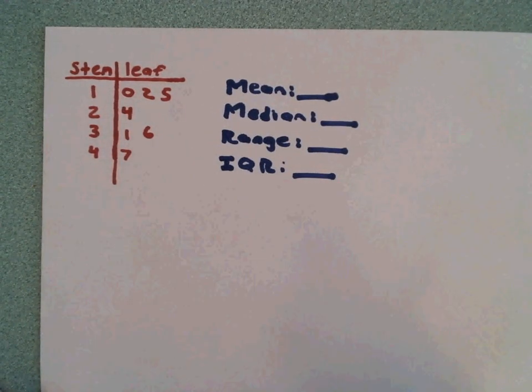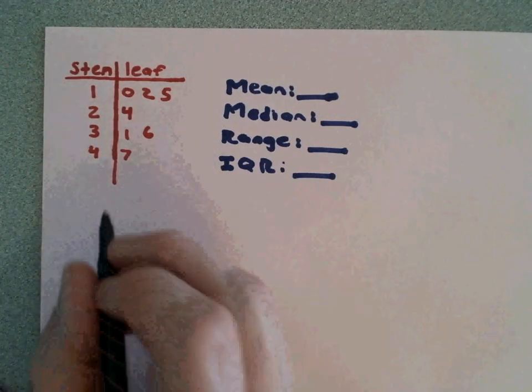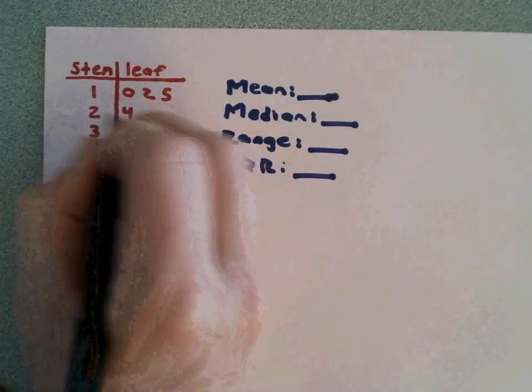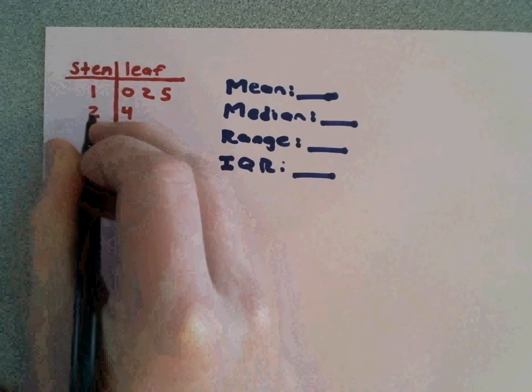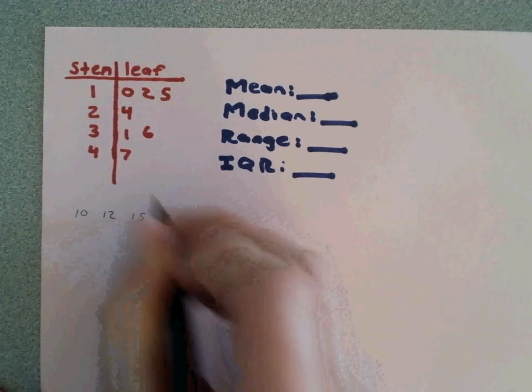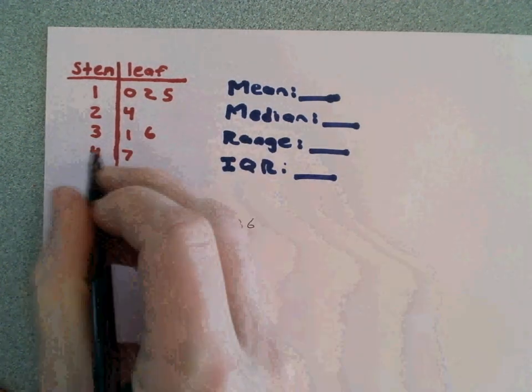The first thing I'd recommend doing is putting the data values from the stem and leaf in order from least to greatest. So we have 10, 12, and 15. We then have 24, 31, 36, and then 47.